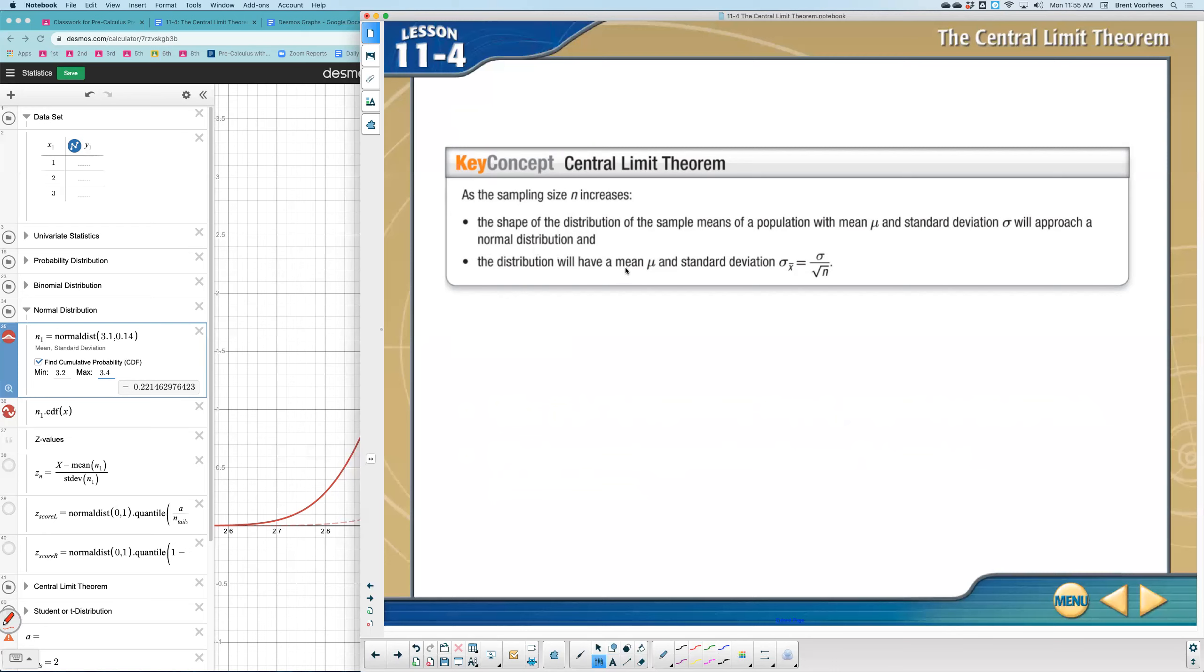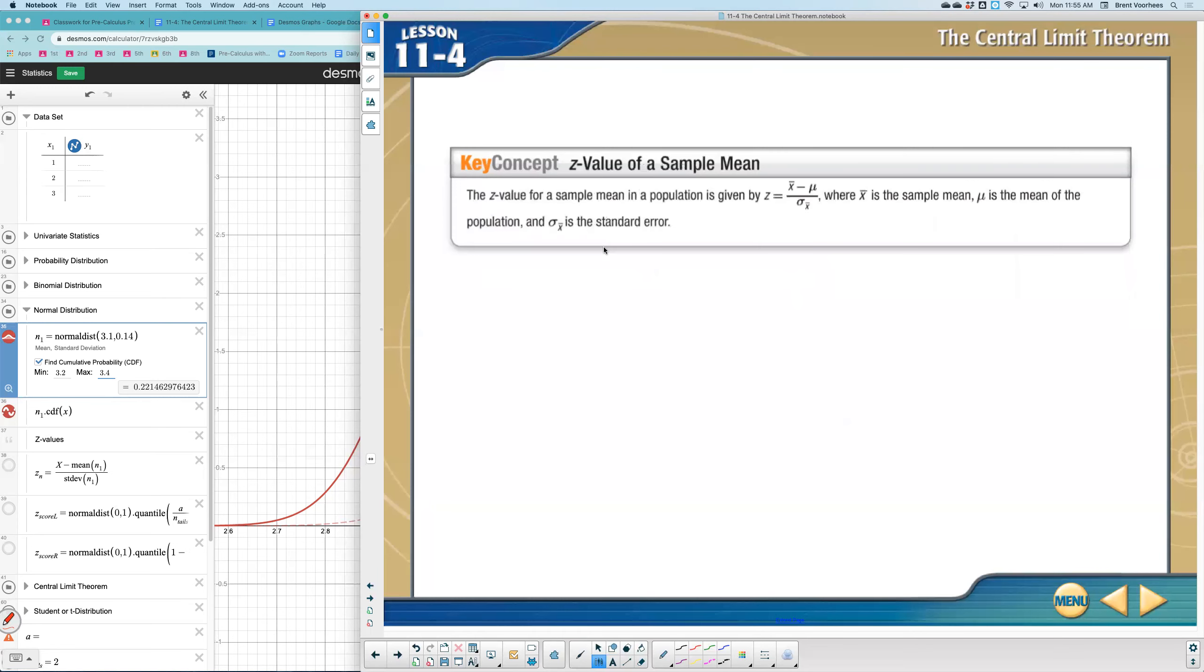The distribution will have a mean and a standard deviation. I want you to notice what's going to happen. The standard deviation, when you change from whatever distribution it was into the central limit theorem, symbolized as sigma x bar or sample mean, is going to be the original standard deviation divided by the square root of the samples. The mean will stay the same.